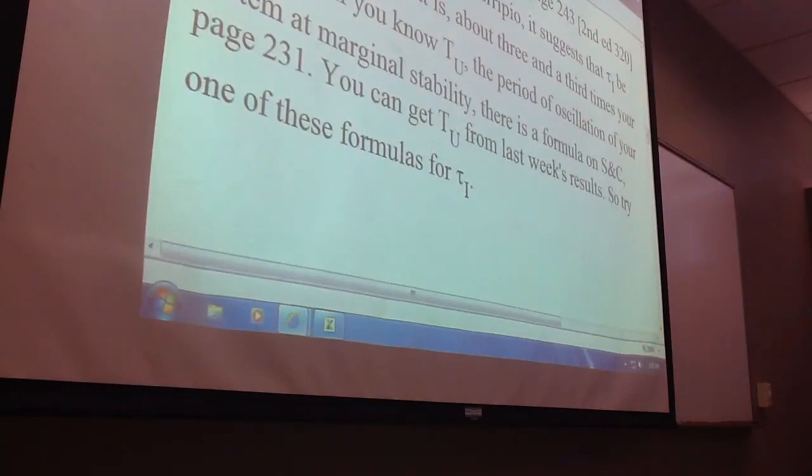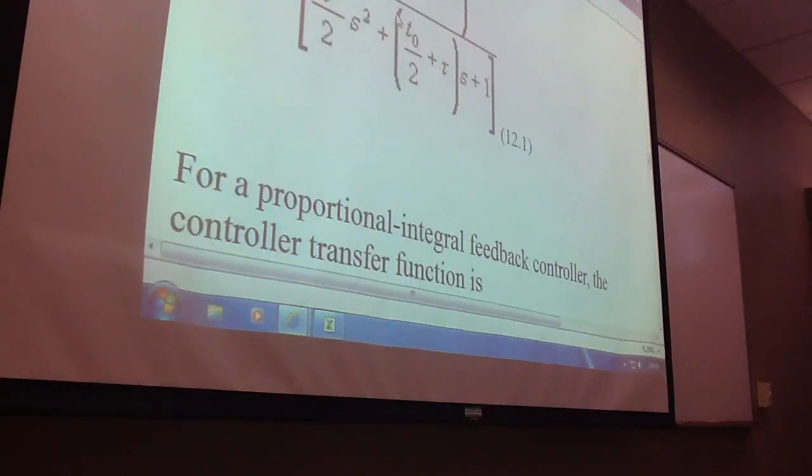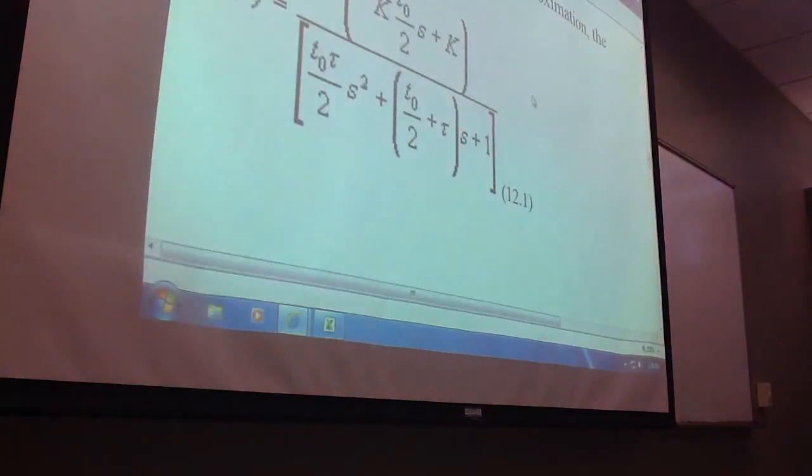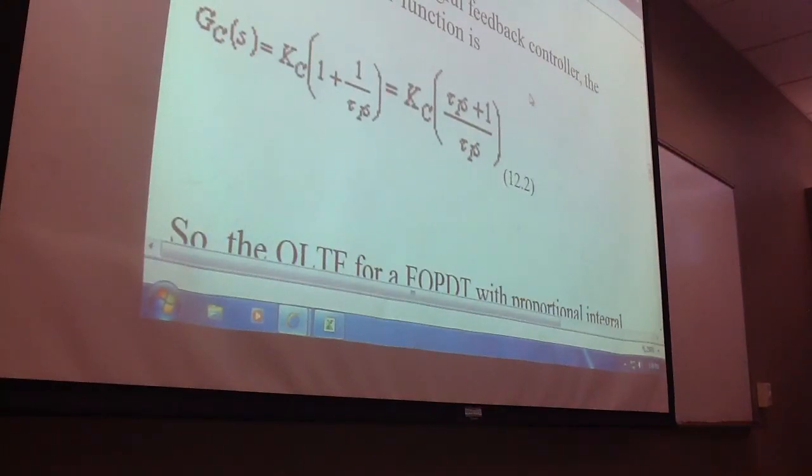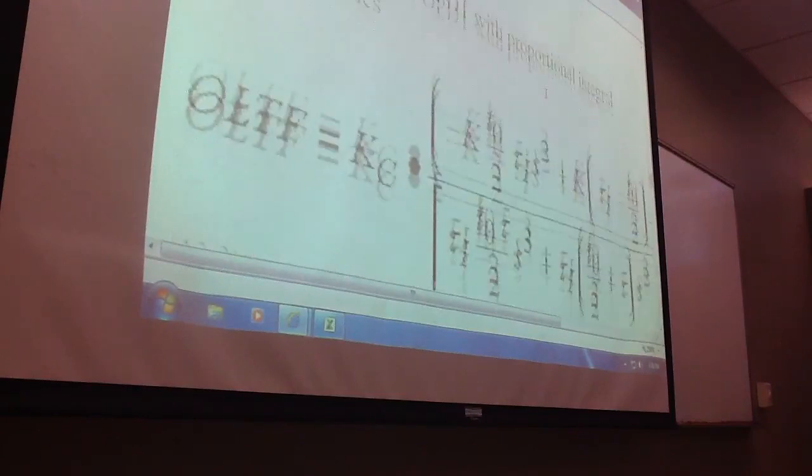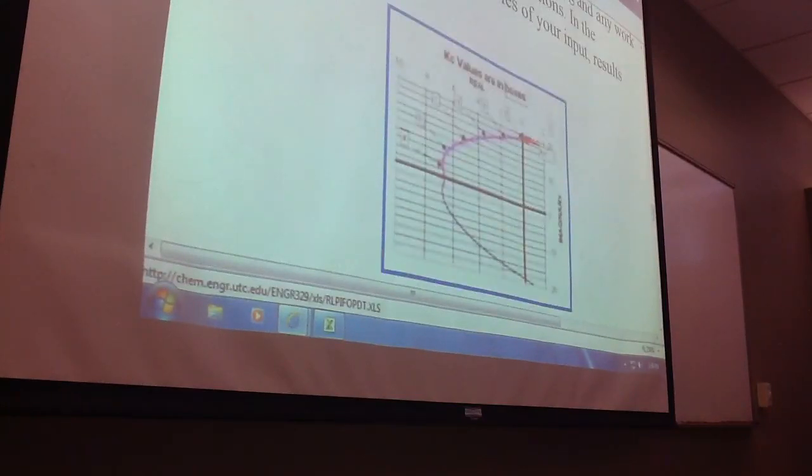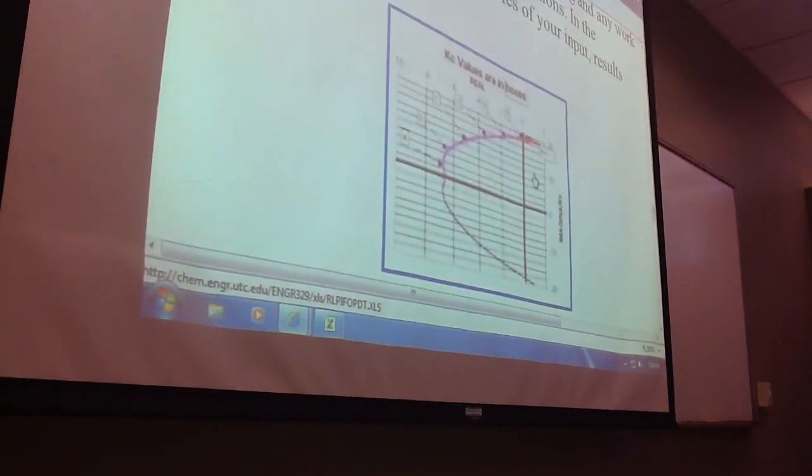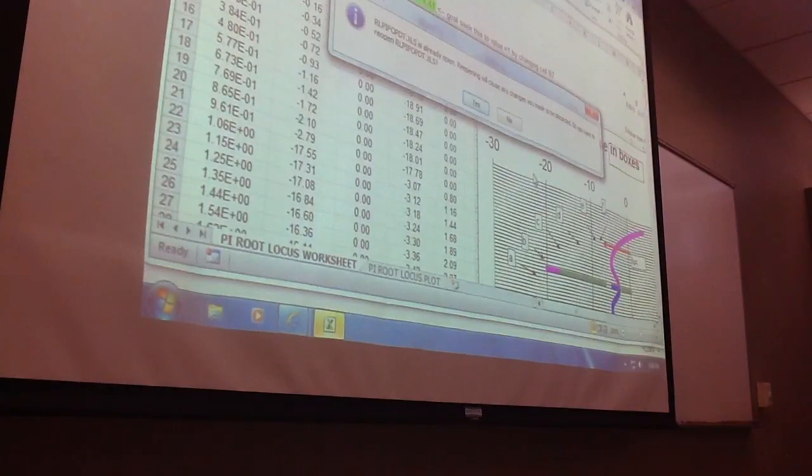Okay, so there you go. There's some formulas for you. There's that formula 3.33. Oh, I wish I'd done tau sub 0 or 0.3. There's the transfer function.